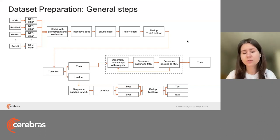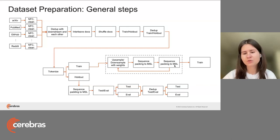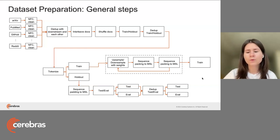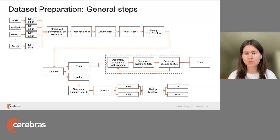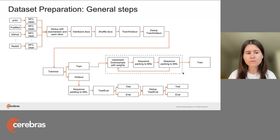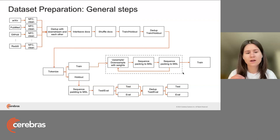Then you need to pack the sequences up to MSL again and shuffle those sequences. After that, you have the training set you can start training on. The reason we shuffle so many times is that when packing documents together into sequences, you don't want the same similar documents packed together in one sequence — that makes it hard for the model to learn to predict the next token. Then you shuffle the sequences so the model doesn't learn spurious dependencies from the ordering. That's the general dataset preparation pipeline.